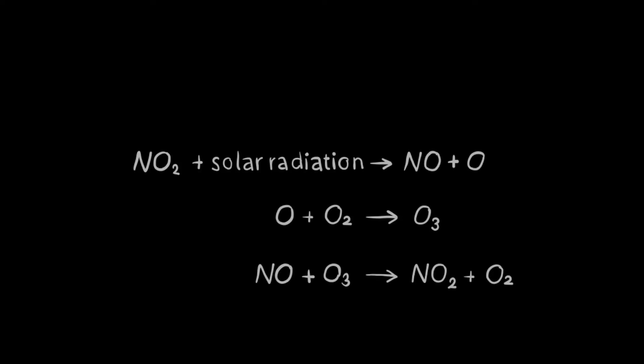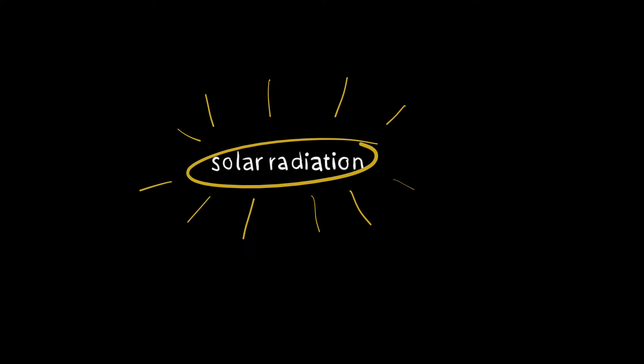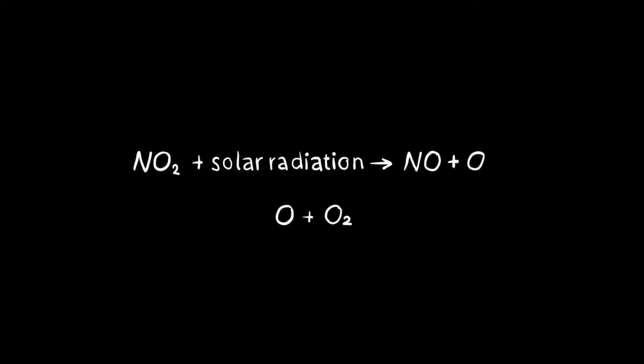We can also write a chemical model. For example, we can model the effect of nitrogen dioxide on ozone. Under the influence of solar radiation, nitrogen dioxide dissociates to form nitric oxide and atomic oxygen. Atomic oxygen reacts with oxygen to form ozone, and ozone reacts with nitric oxide to form nitrogen dioxide and oxygen.